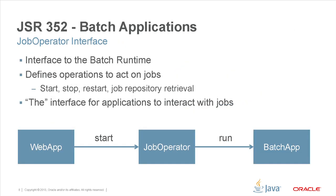Next we'll talk about the job operator interface. This is the interface to the batch runtime itself. It defines a set of operations to enable a program to act upon jobs — things like starting a job, stopping a job, restart, and various retrieval-oriented operations on the job repository itself, like list of jobs, list of running jobs, et cetera. This is the interface for applications to use to interact with jobs in the system, whether initiating them, stopping them, or gathering information about jobs that are running or have run in the past.